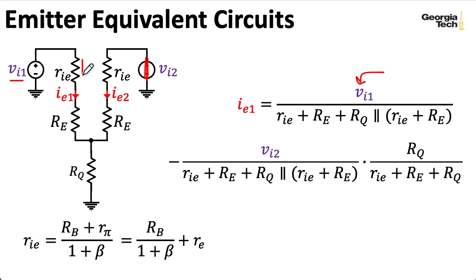Well, I have RIE in series with RE, so I add those together. And then what do I have? I have a parallel combination of RQ and RIE and RE that you see over here. So that first term is just Ohm's Law.